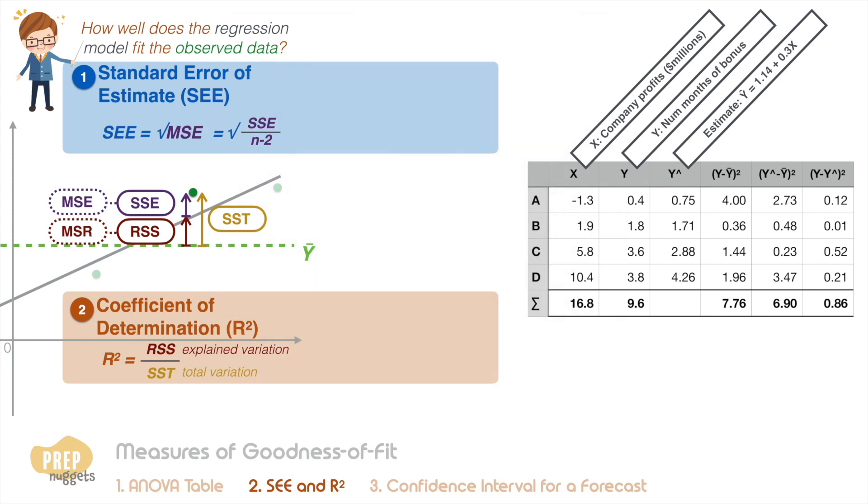And we're back. The total sum of squares is a measure of the variation of observed values from the mean, so the SST is 7.76.